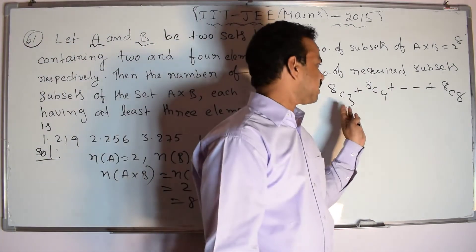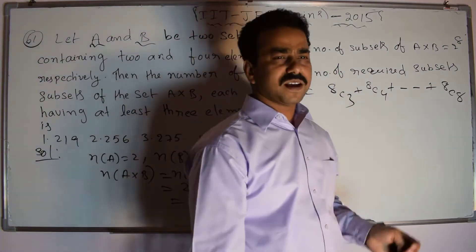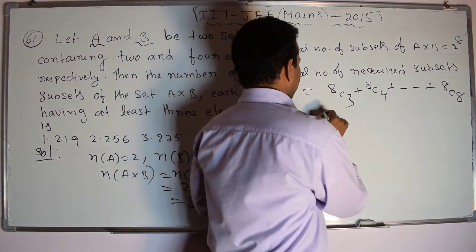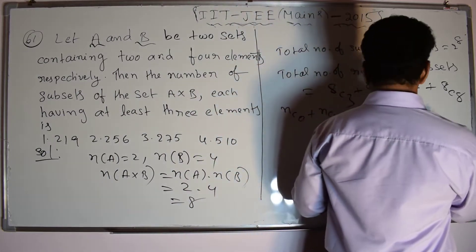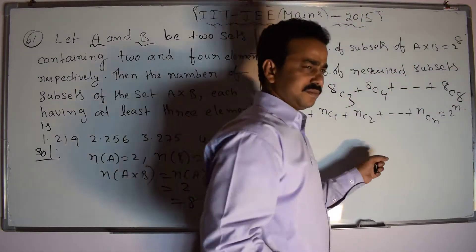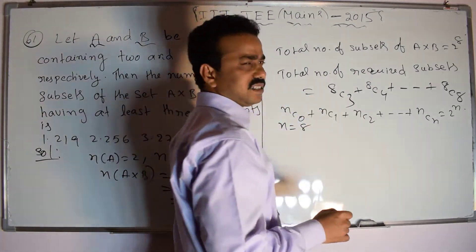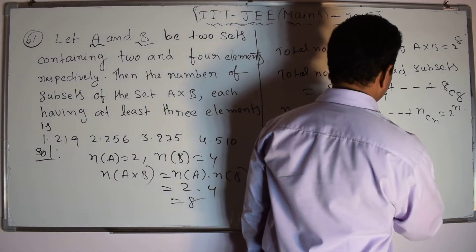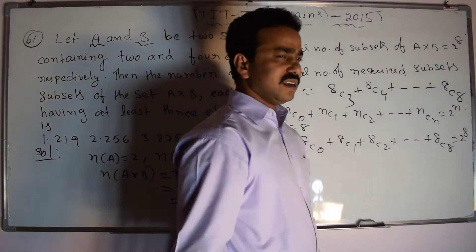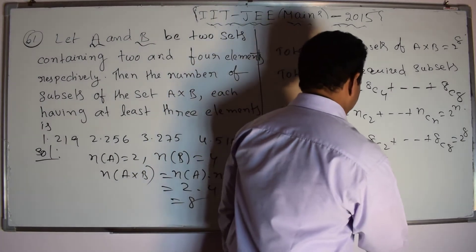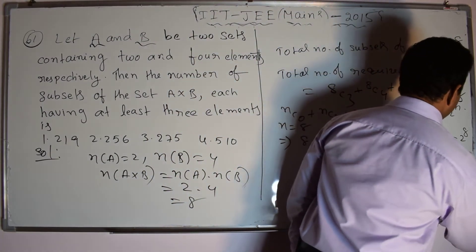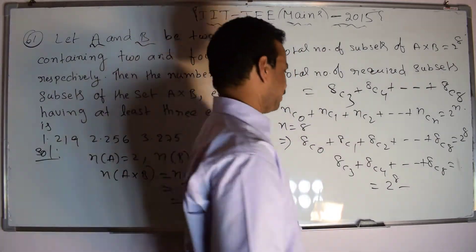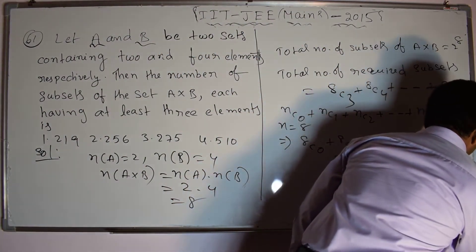Is it possible to solve this expression directly? Yes, by the general method, but it takes a lot of time. There is a shortcut using the binomial expression. The sum of binomial coefficients: NC0 + NC1 + NC2 + ... + NCN = 2 power N. Taking N = 8: 8C0 + 8C1 + 8C2 + ... + 8C8 = 2 power 8. Therefore, 8C3 + 8C4 + ... + 8C8 = 2 power 8 minus (8C0 + 8C1 + 8C2).